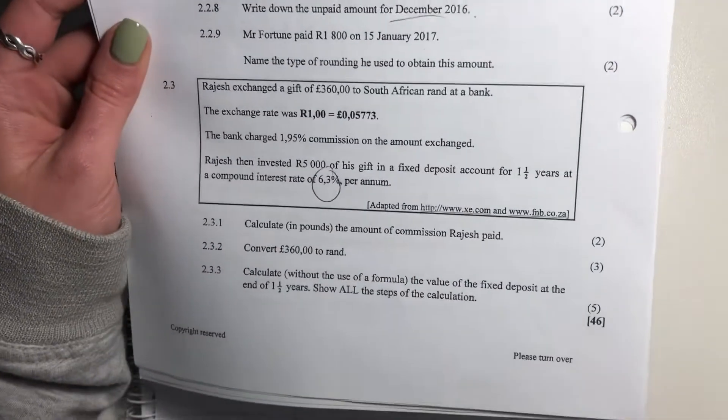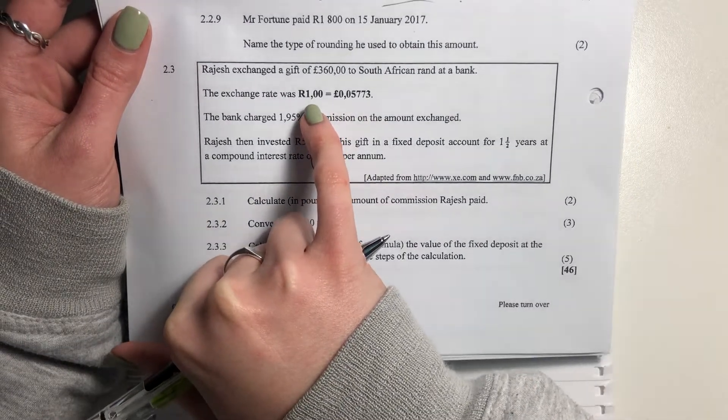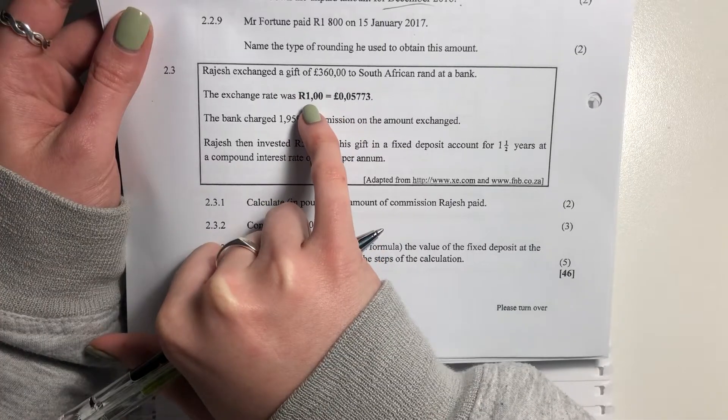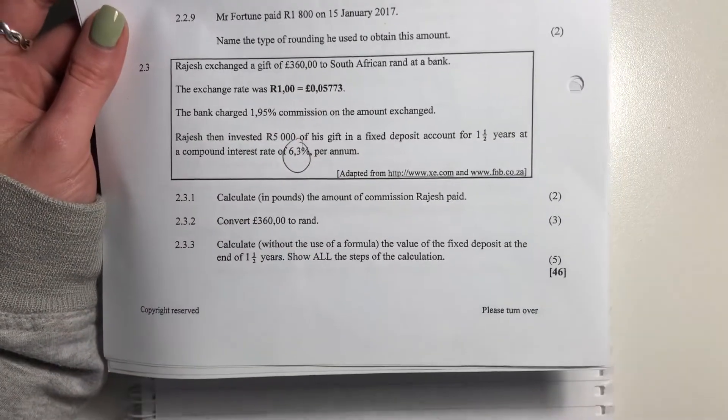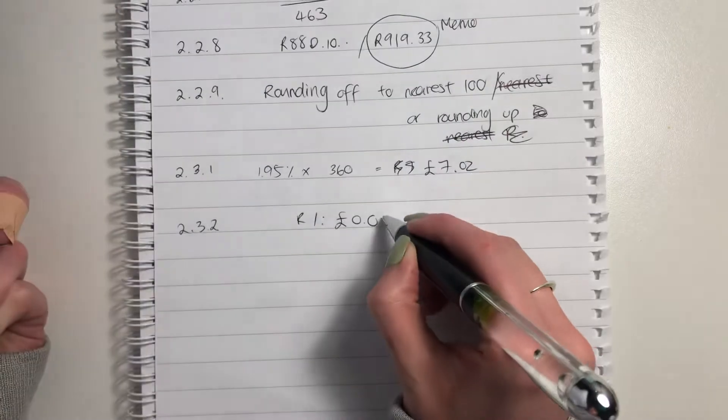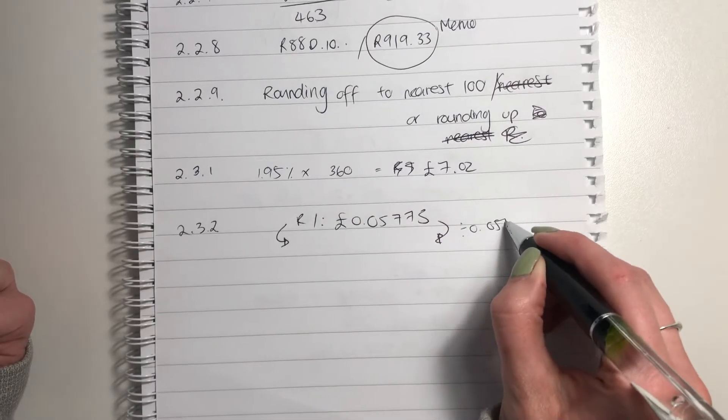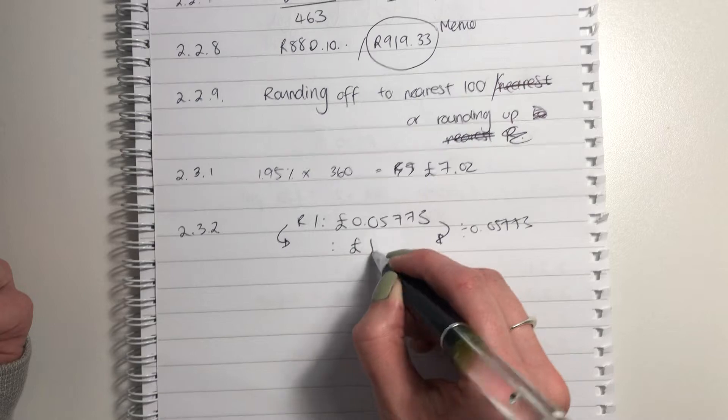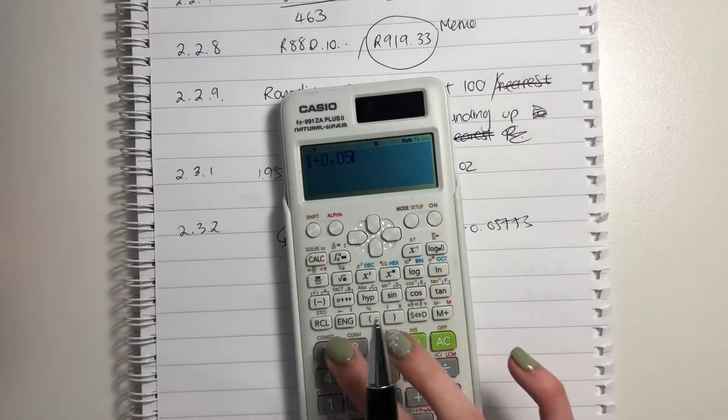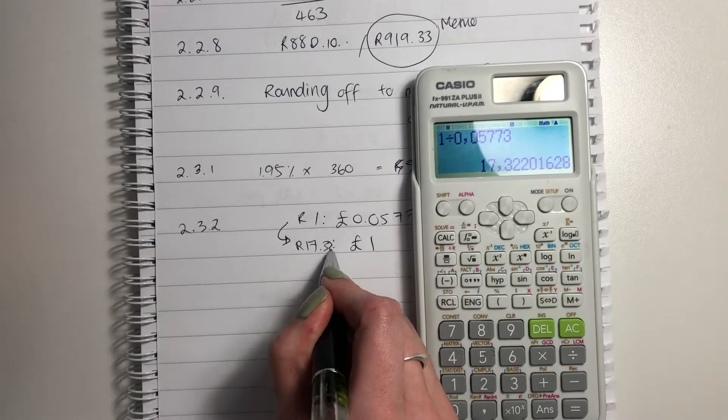Let's now move on to the next question. It says convert the pounds to rands. So if that is 1 rand, and this is in pounds, let's get this to be 1 pound and that to be the number of rands. So what we're going to do is divide both sides by 0.05773. So 1 rand to 0.05773, and both sides we're going to divide by 0.05773. So this side is going to become 1 pound.